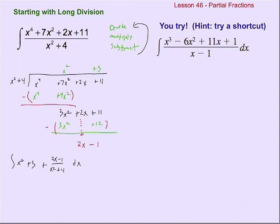Two of those terms are very easy to integrate. We can integrate x squared to get x cubed over 3, and integrating 3 gives 3x. For the fraction, like we saw in the example with a quadratic factor in the denominator, we need to split it into two separate integrals. It might be tempting to use u-substitution since we have x squared and 2x in the numerator, but we can't separate the 2x from the minus 1 using u-substitution alone — so we'll split it into two completely different integrals.